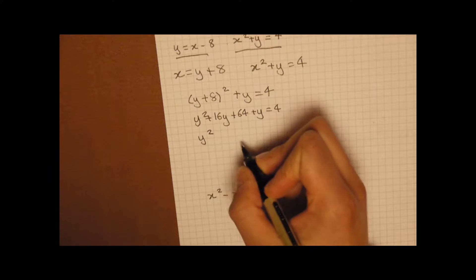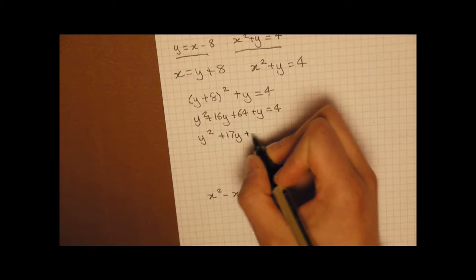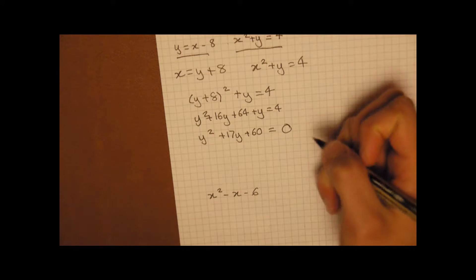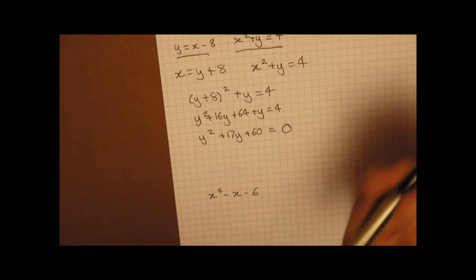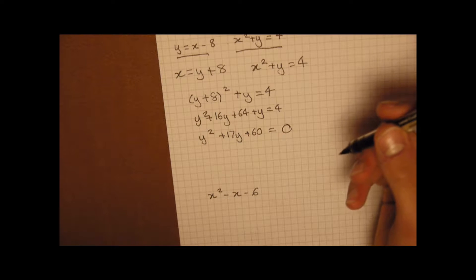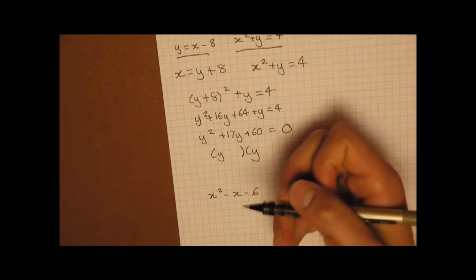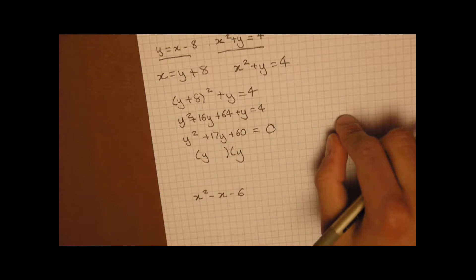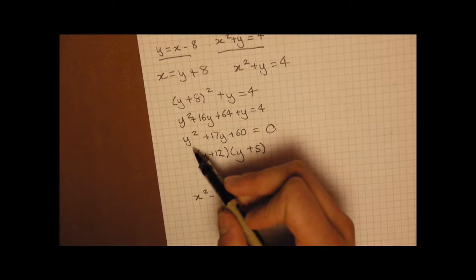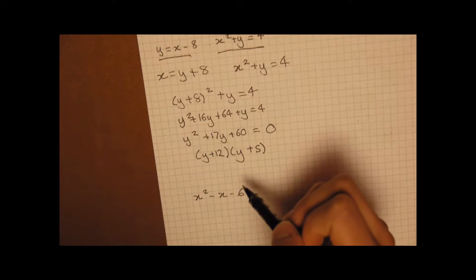So therefore we end up with y squared plus 17y plus 60 equals 0. Now we've got to work out precisely what y actually is, or what the two brackets are. Now we know that it must be y and y. Now the answer is y plus 12 and y plus 5. Now we know this because 12 times 5 is 60, 12 plus 5 is 17.